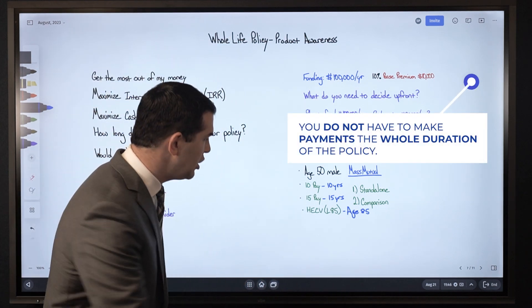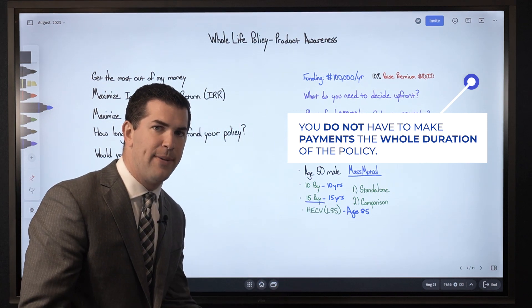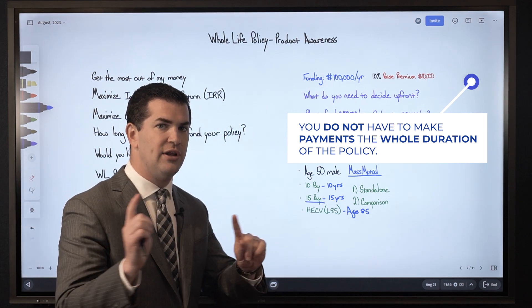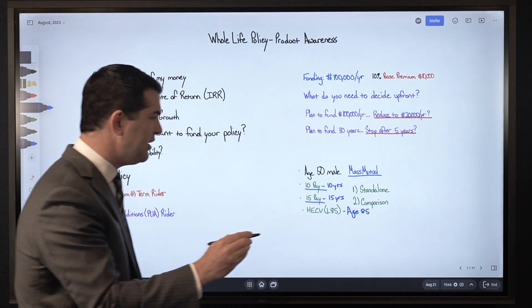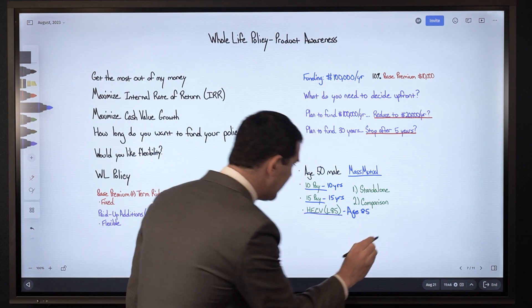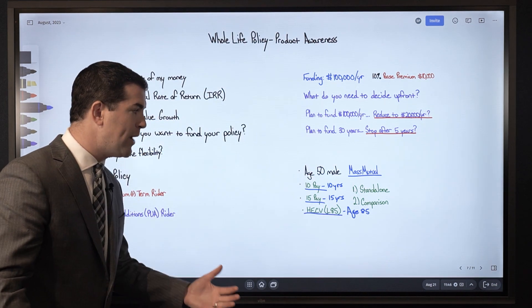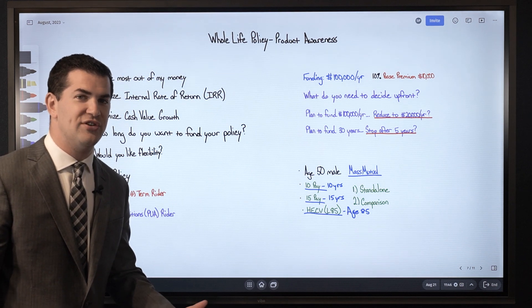So to answer that question, do I have to pay into it for 15 years with a 15 pay policy? The answer to the question is no, you do not. The same is true with a 10 pay policy - you do not have to pay into it for 10 years. And the same is true with a high early cash value policy - you do not have to pay into it until you are 85 years old, which is nice.